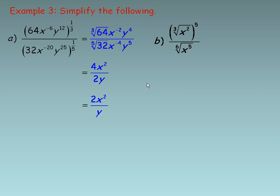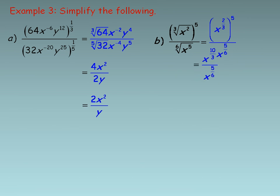For part b, we are going to write this as one single radical. The first thing to do is write the two radicals as powers: the cube root of x squared is x to the 2 thirds — the power is the numerator and the root is the denominator of the rational exponent. The 6th root of x to the 5th is x to the 5 sixths. Now taking that numerator expression as a power of a power, I multiply the exponents: 2 thirds times 5 is 10 thirds.